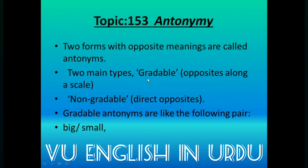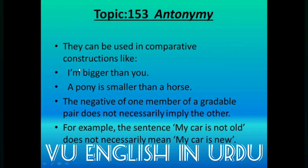Two main types of antonyms: first is gradable — opposite along a scale, جسے comparative degree میں use کر سکتے ہیں، جیسے I am bigger than you. دوسری type non-gradable ہے — یہ direct opposite ہوتی ہے، comparative نہیں کرتے. Gradable antonyms can be used in comparative construction, like: a pony is smaller than a horse.